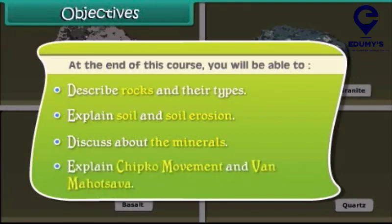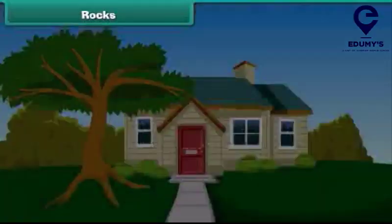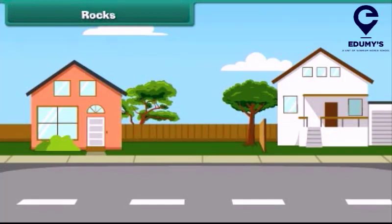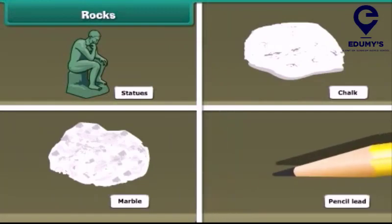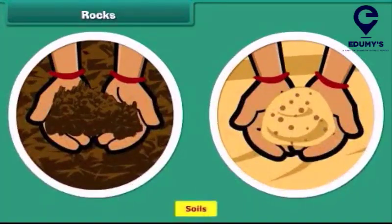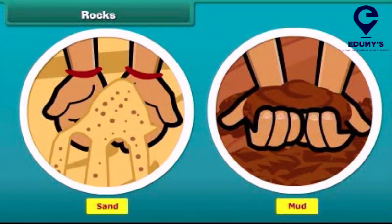We will also explain the importance of the Chipko movement and Van Mahotsav. As we can see, rocks are all around us. We can also see different things made up of rocks inside our house, in our yard, on the road, and everywhere. Statues, chalk, marble, pencil lead, mountains, and soil are all different forms of rocks. You will be surprised to know that rocks aren't always huge solids — sand and mud are also forms of rocks.